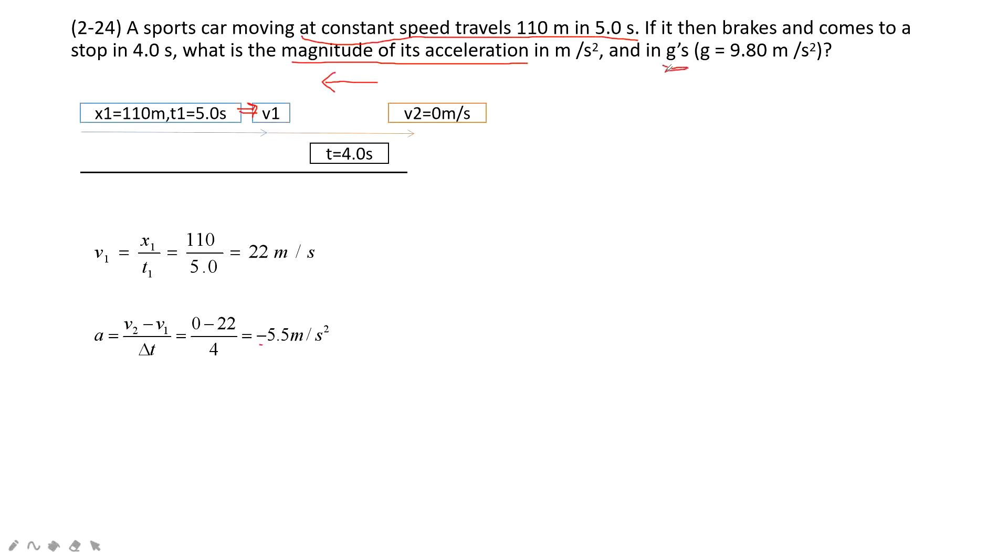In unit g, it tells us g is 9.8 meters per second squared. So how can we do that? It's like a unit conversion. We know acceleration is negative 5.5 meters per second squared. And it tells us 1g is 9.8 meters per second squared. So we times this one,